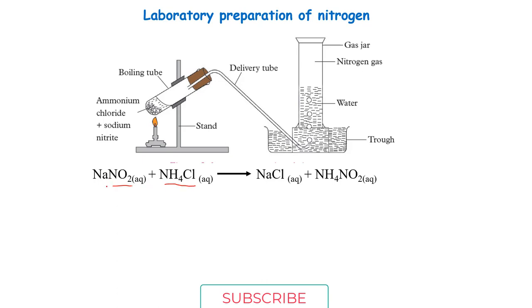What actually happens is that we shall have double decomposition of the two. At least if you know methods of preparation of salts this is one of them. Basically what happens is we have an exchange of radicals so we shall form our sodium chloride and then shall form our ammonium nitrite.